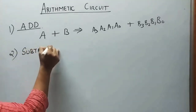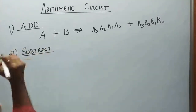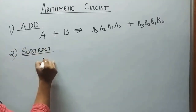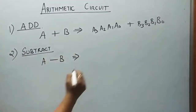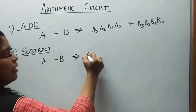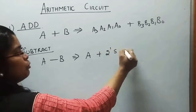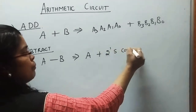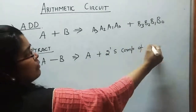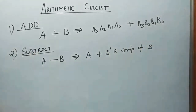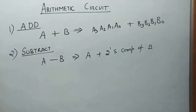The next operation is subtraction. A minus B, as you know, means A plus the 2's complement of the second variable B. So A minus B equals A plus the 2's complement of B.